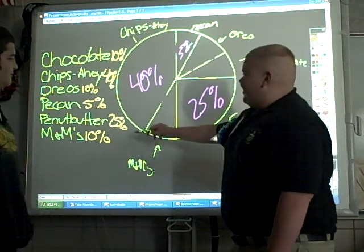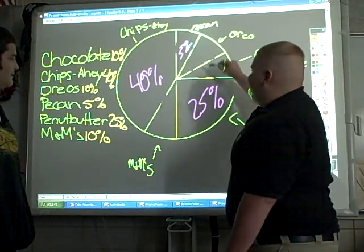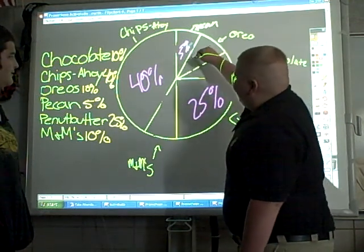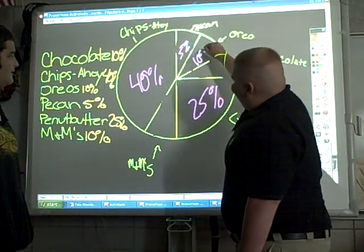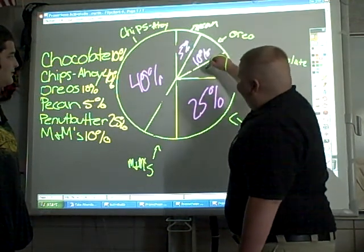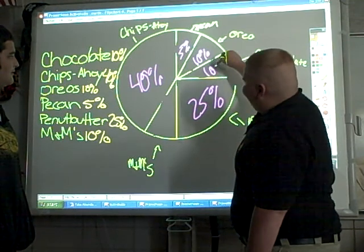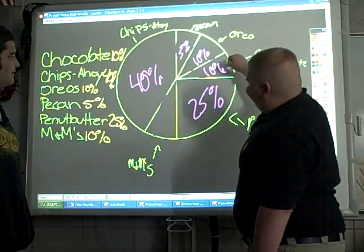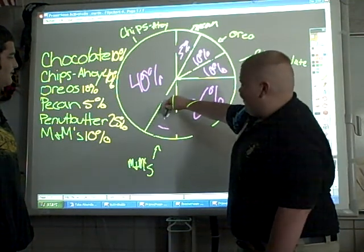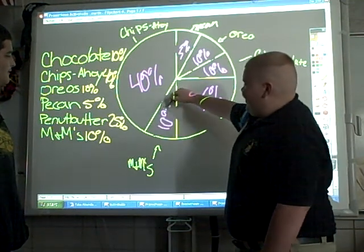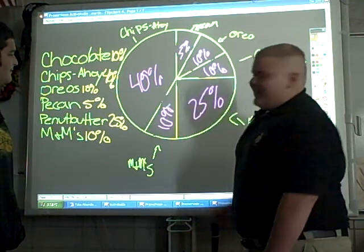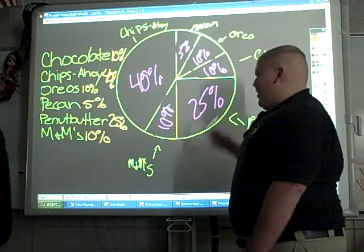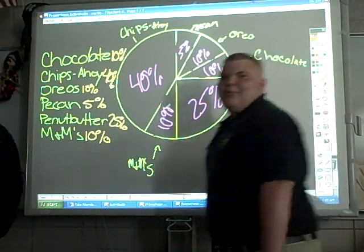Then it looks like the rest are 10, so you would use the 10 right here, 10 right here, and 10 right here, and the last one right here. And that is how you construct a pie graph. Bam!